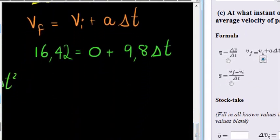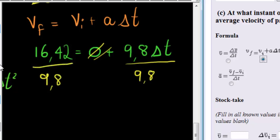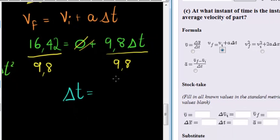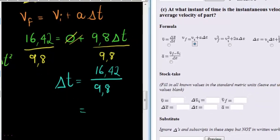Solving for Δt, we notice this 0 will just vanish. Dividing by 9.8 on both sides will give us the time. So change in time equals 16.42 divided by 9.8, and when I do that,